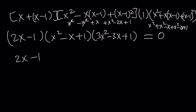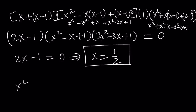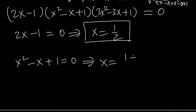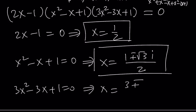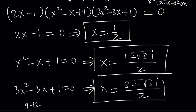Let's go ahead and set each one equal to zero. 2x minus 1 equals 0 gives us x equals 1/2, and that is our first solution. If you set x squared minus x plus 1 equals 0, you're going to get non-real complex solutions: 1 plus or minus the square root of 3i divided by 2, because the discriminant gives 1 minus 4, which is negative 3. We get two complex solutions from there. From the third factor, x equals negative b plus or minus the square root of b squared — which is 9 — minus 4ac, which is 12. That's negative 3 again, so plus or minus root 3i divided by 2. So we get five solutions total: four of them are complex, and one solution is real.